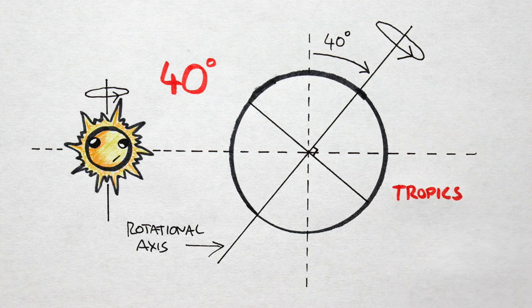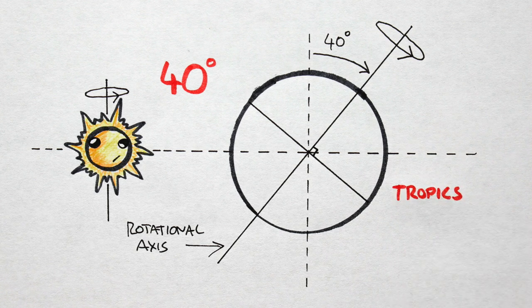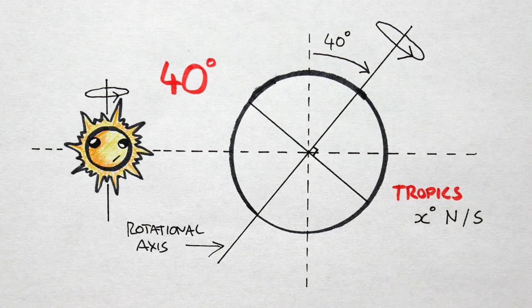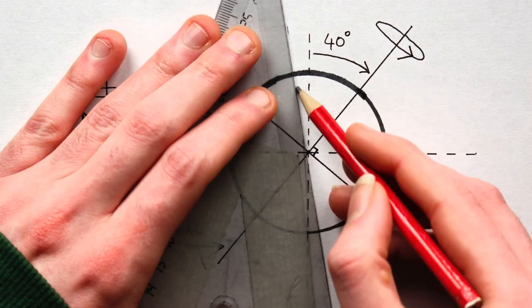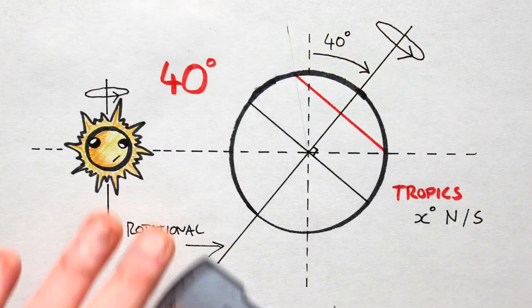A planet's tropics will always be located at a latitude of x degrees north and south of the equator, where x is the planet's axial tilt. In this case, that's 40 degrees north and south, here and here.